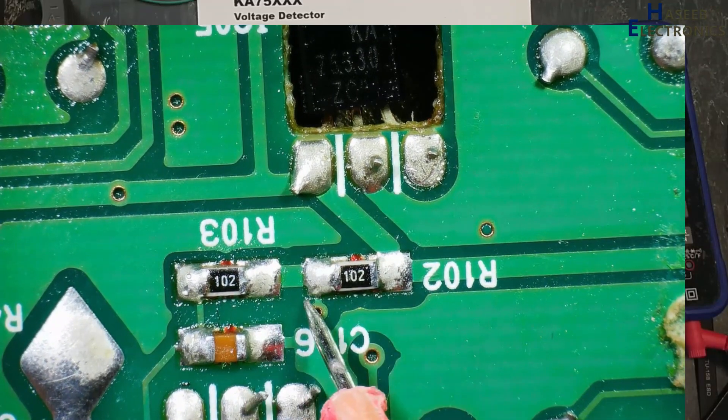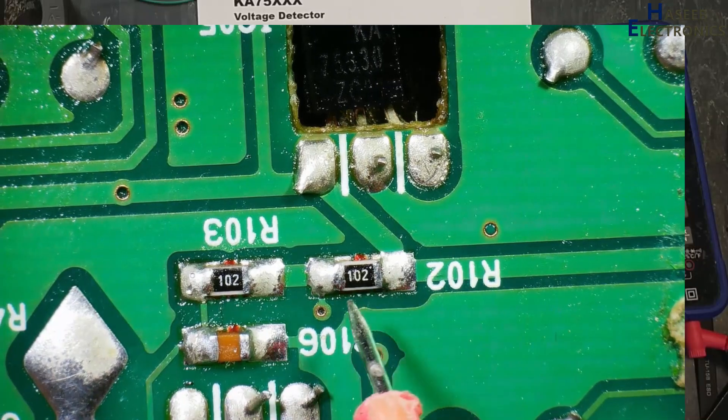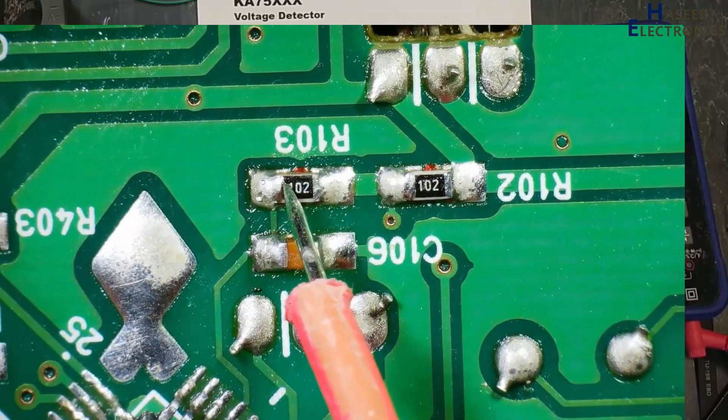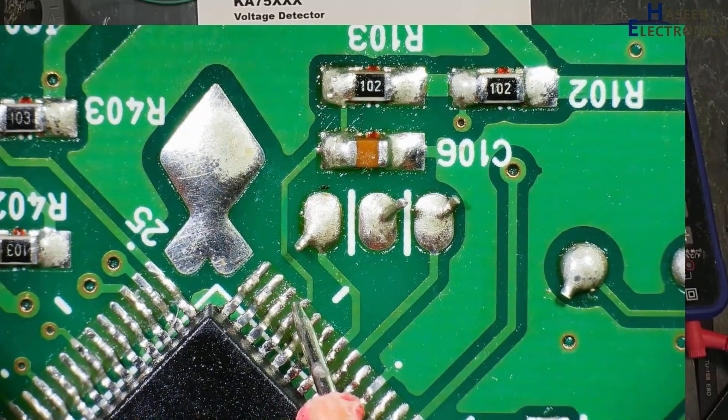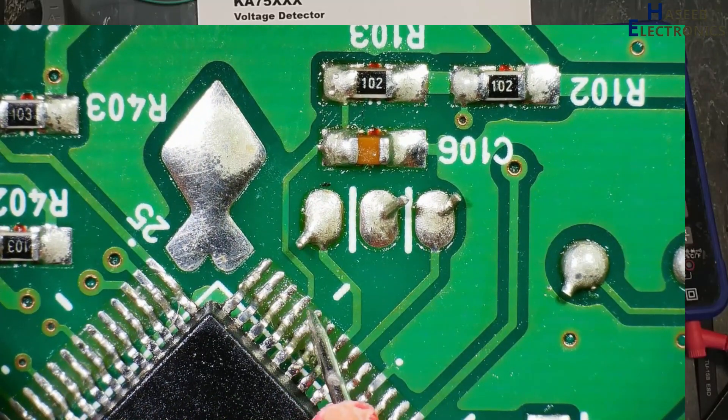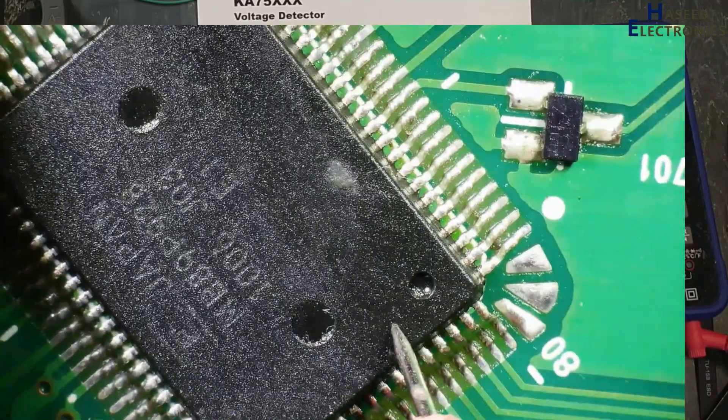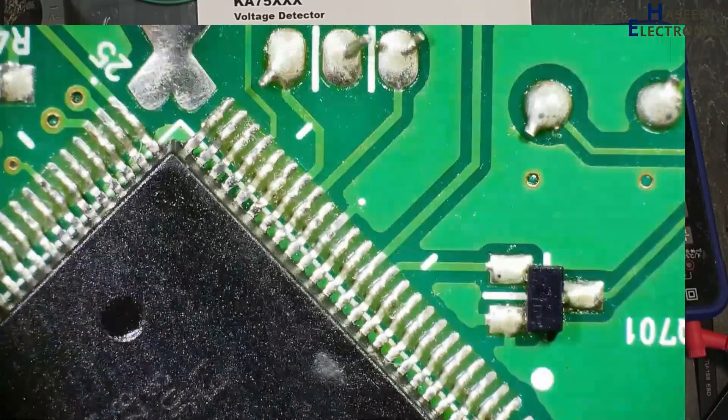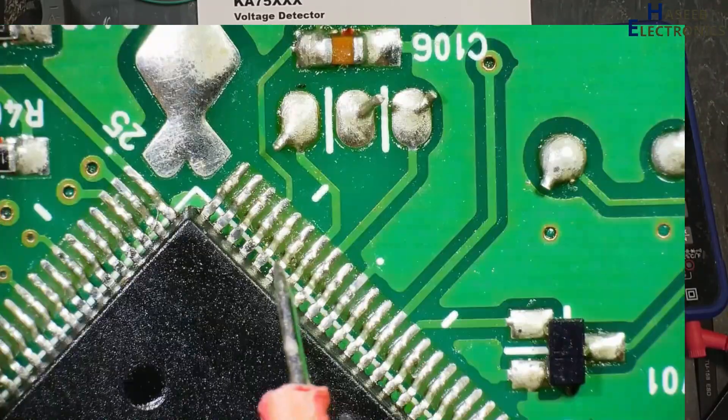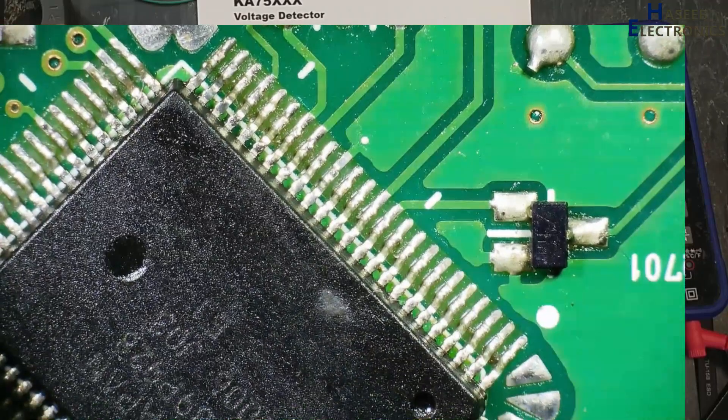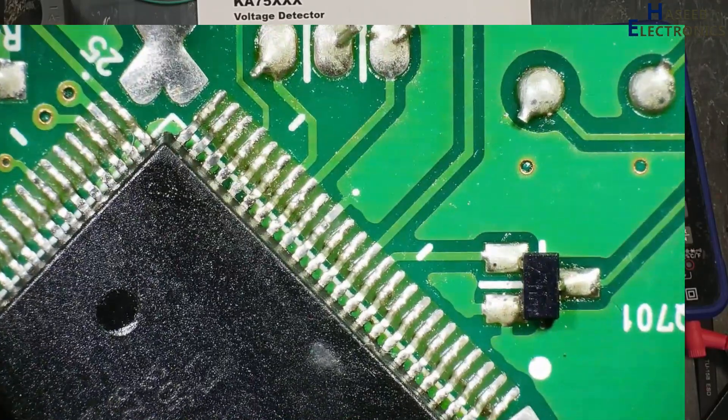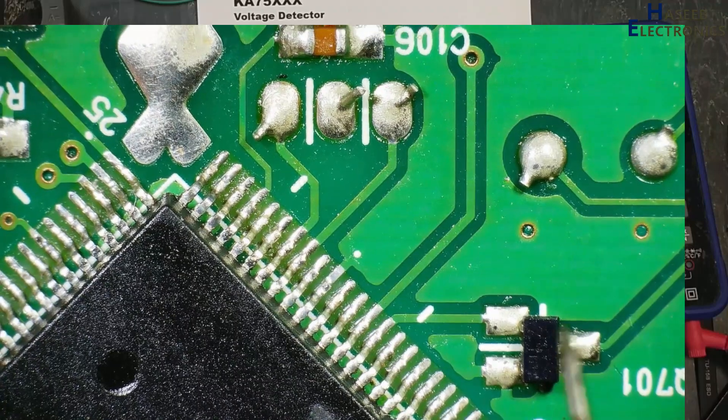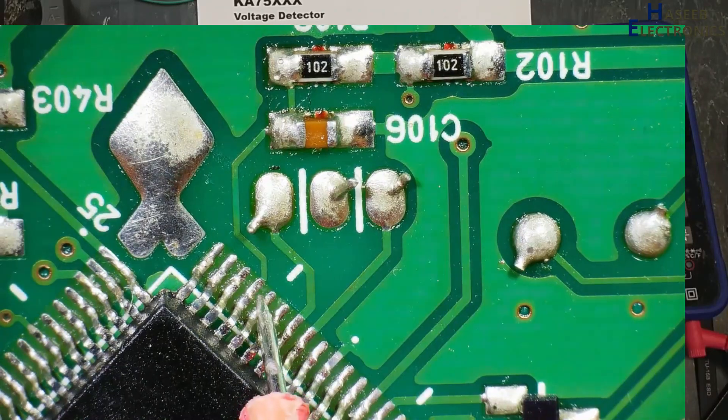Then after this resistor, 1k resistor, it is reaching to this pin, that is pin number 21 of this microprocessor MB89P982. In this processor pin number 21, maybe in some other processor it will reach to any other number pin, but that pin will be reset pin. This pin is reset bar pin.